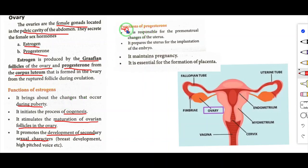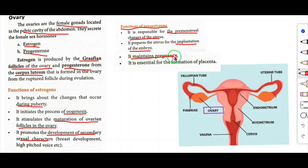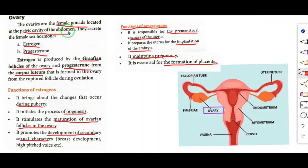Functions of progesterone: it is responsible for the premenstrual changes of the uterus; it prepares the uterus for implantation of the embryo; it maintains pregnancy; and it is essential for the formation of the placenta.